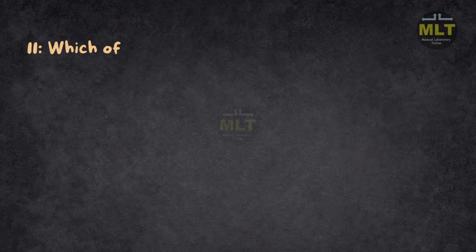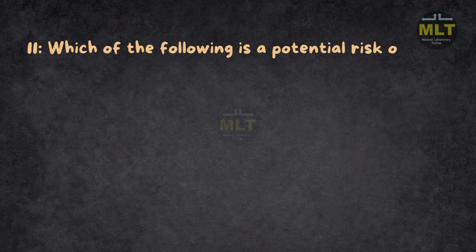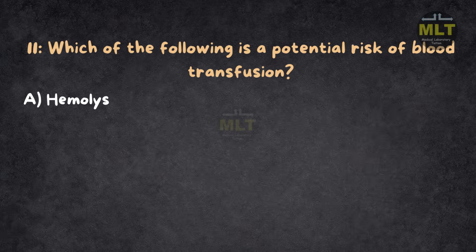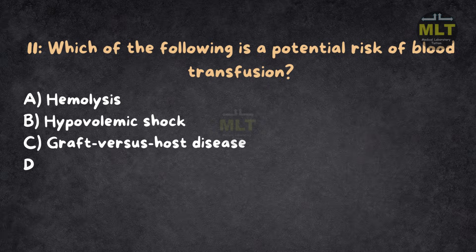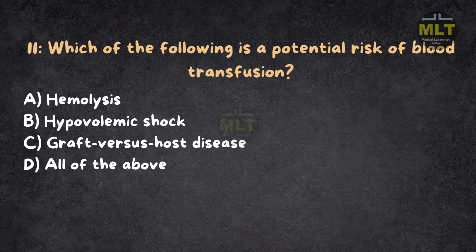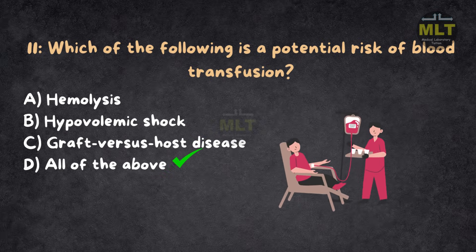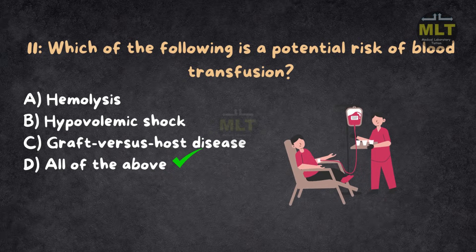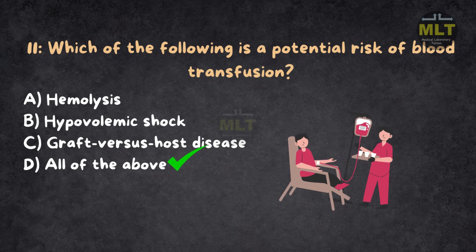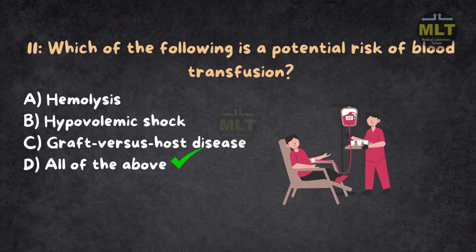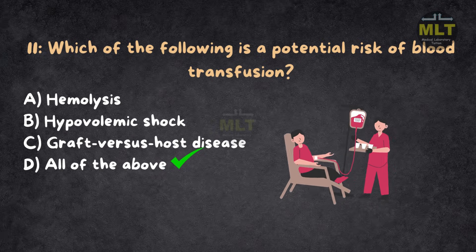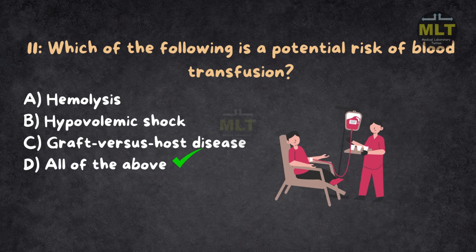Question 11: Which of the following is a potential risk of blood transfusion? Option A: Hemolysis. Option B: Hypovolemic shock. Option C: Graft versus host disease. Option D: All of the above. Correct answer: D, all of the above. All of these are potential risks associated with blood transfusion. Hemolysis can occur if the blood is incompatible. Hypovolemic shock can result from transfusing too much blood. Graft versus host disease is a rare but serious complication, especially with bone marrow transplants.